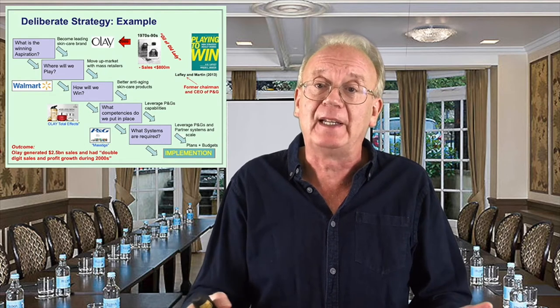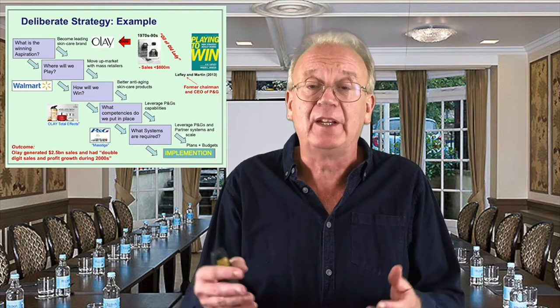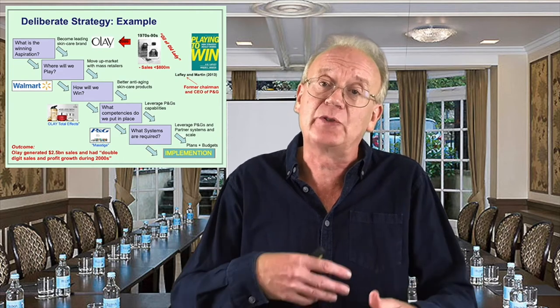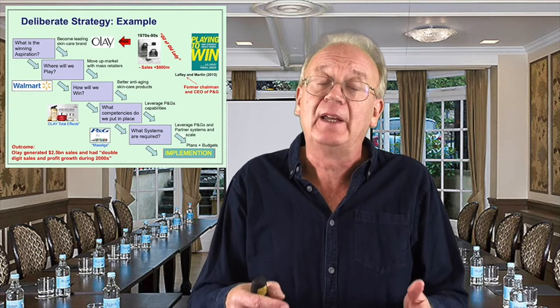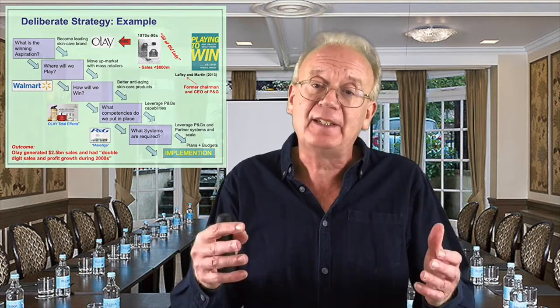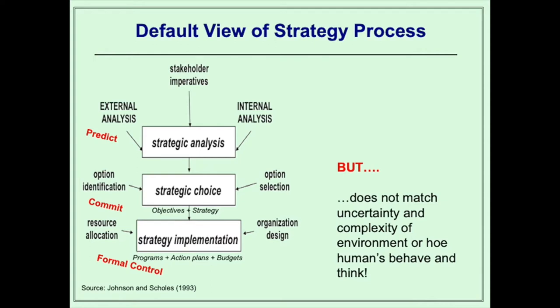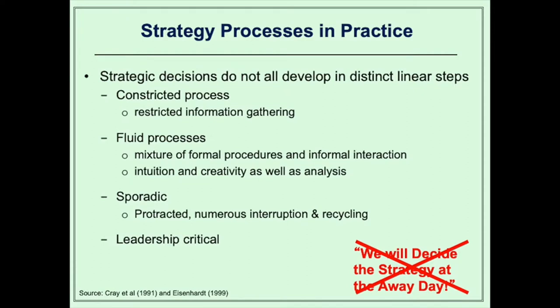For example, this book by Lafley and Martin. Lafley was the former chairman and chief executive of Procter & Gamble and he tells the story of the regeneration of Olay through a very rational deliberate process. However, that process doesn't seem to match the uncertainty and complexity of the environment in which firms and managers operate, or how humans behave and think. Indeed, if you ask managers about how strategy works in their organisation, they'll say it is nothing like that — usually saying that their firm is therefore not very good at strategy. The research of practice of strategy shows that strategic decisions do not take place in distinct linear steps. It's a very constricted process where information gathering is limited and time-constrained.